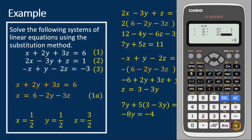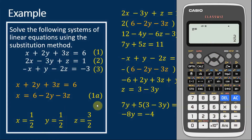Let's see the solutions. The calculator shows x equals 1/2 — this is correct. y is also equal to 1/2 — also correct. And z equals 3/2. So all three solutions are correct for this system of linear equations. This is how we use the Casio FX570EX calculator to verify our answer when solving a system of linear equations with three unknowns.